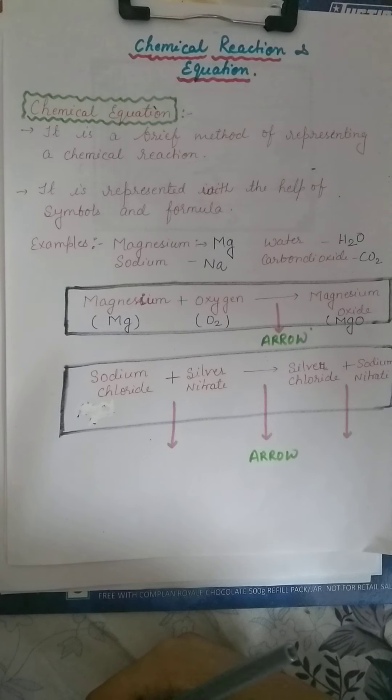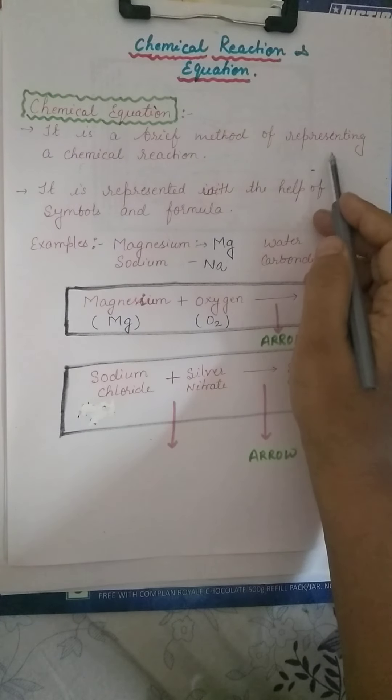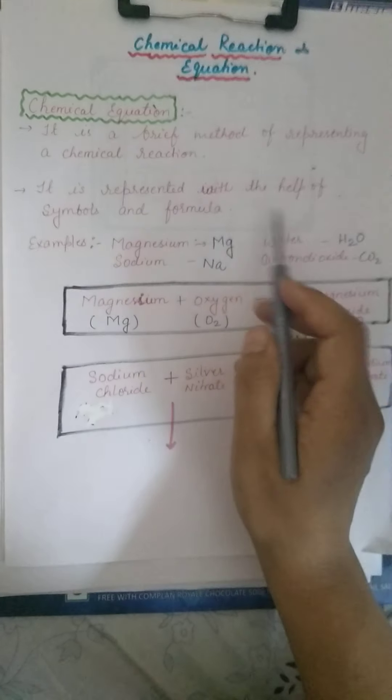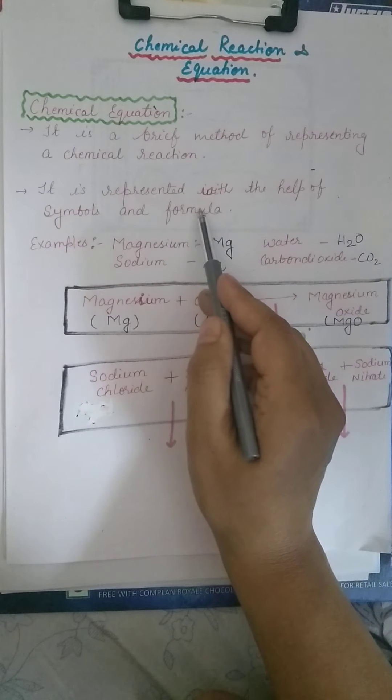Let's take the definition of chemical equation. It is a brief method of representing a chemical reaction. It is represented with the help of symbols and formulas.